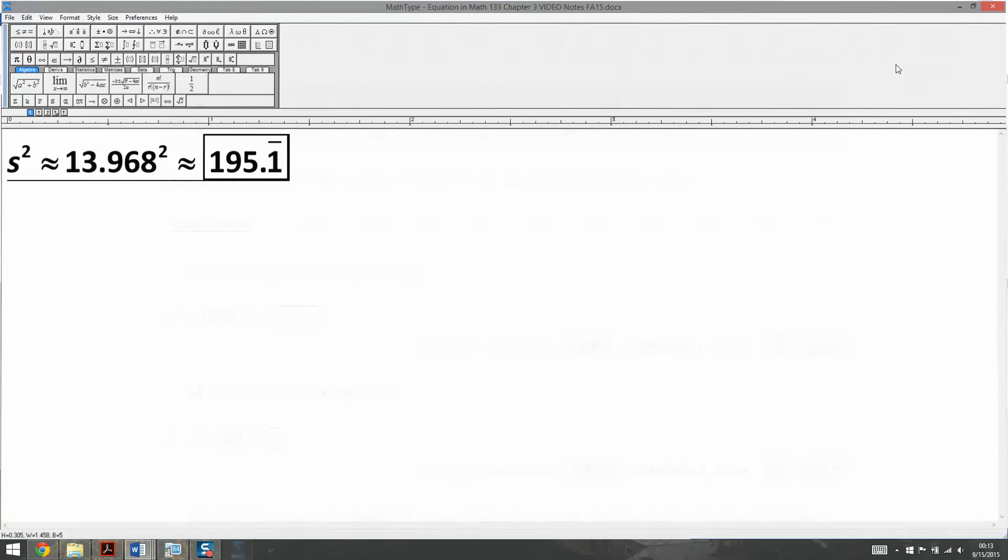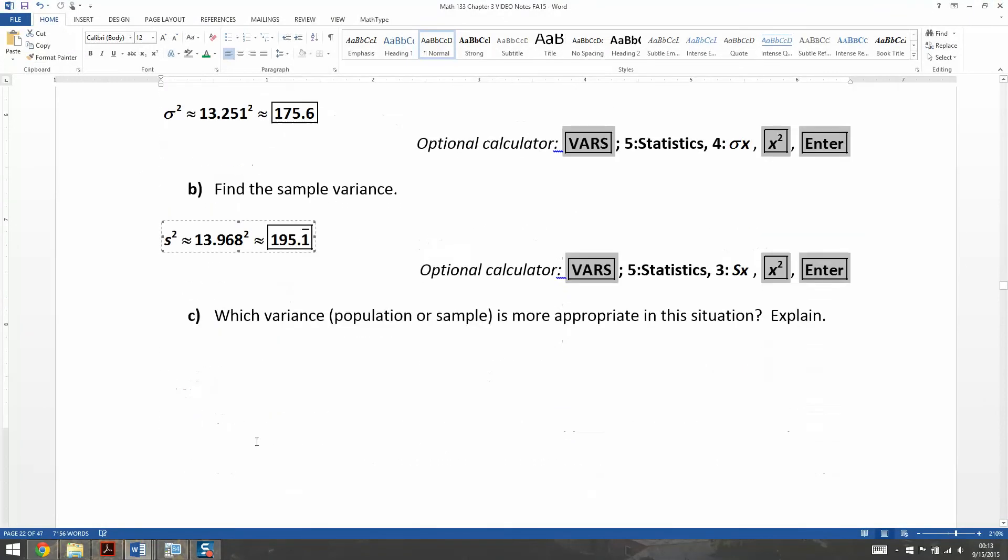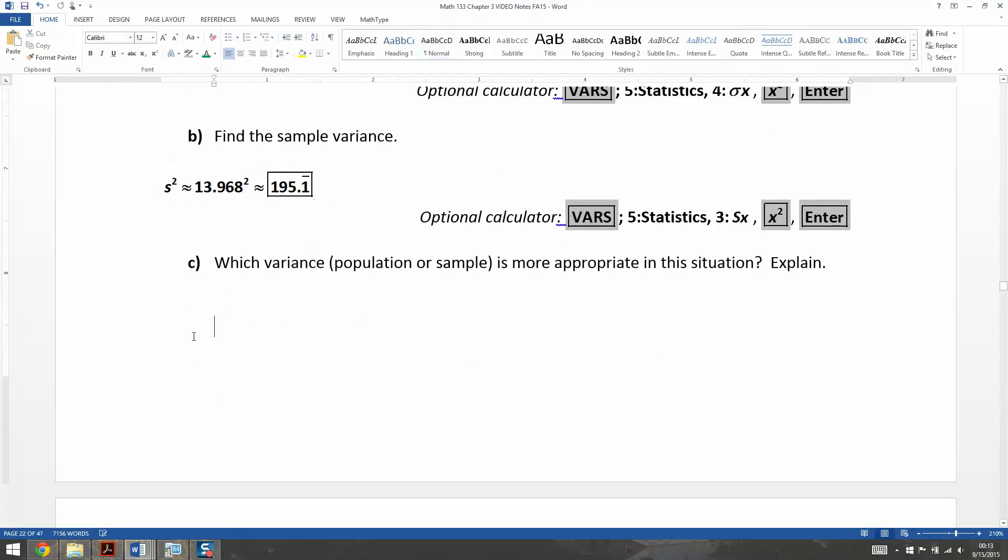There we have it. All right, now which one was more appropriate in this situation? Definitely the sample one. The sample variance because these data were from a sample. Sample variance s squared because the data were from a sample.